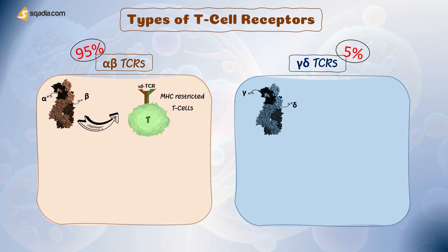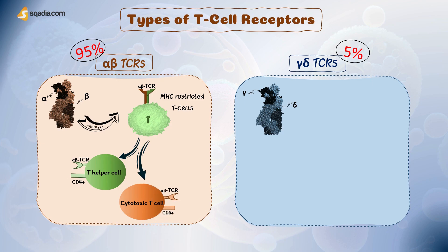In general, when we refer to the TCR, we are referring to an alpha-beta TCR. They are found on MHC-restricted T-cells, meaning they are found on all helper T-cells and cytotoxic T-cells. Cytotoxic T-cells bind the complex of endogenous antigen with MHC-1 molecules over the target cells, causing the killing of virally infected cells. On the other hand, helper T-cells bind the complex of exogenous antigen with MHC-2 molecules, which further helps activate B-cells and cytotoxic T-cells.